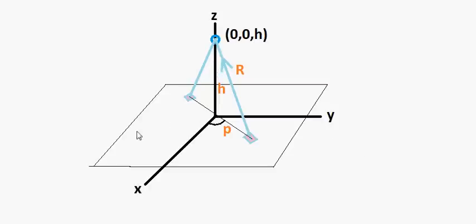We're going to be working in polar coordinates — I use rho as the R for polar coordinates, and that's the angle. This is going to be our vector R from the source of the charge to the point.